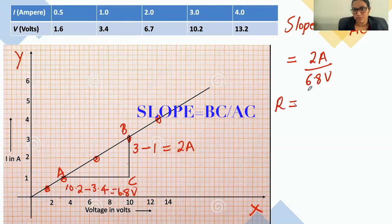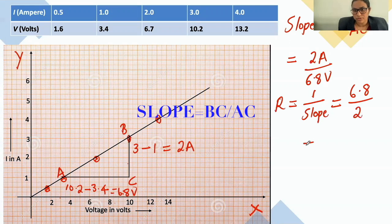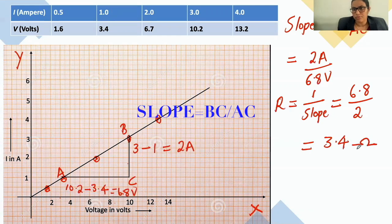But what is resistance? Resistance equals V by I. The slope we calculated is I by V, so resistance will be the inverse of the slope, which equals 6.8 divided by 2, which gives 3.4 ohm. That is the resistance value.